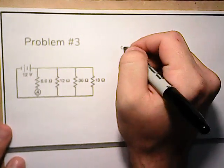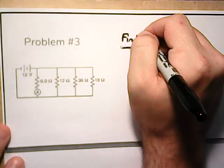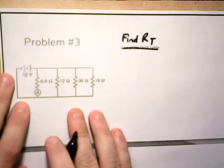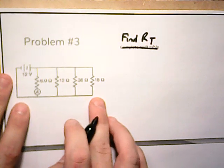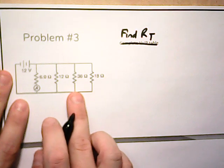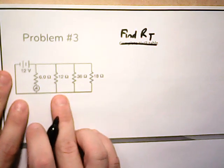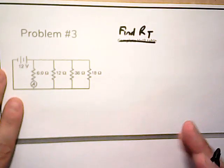Okay, let's take a look at problem number three. So for the first part, we should find R total. So this circuit has one, two, three, four branches. So we're going to have to change it from four branches to three, then three branches to two, then two branches to one to find our answer. So it's going to take three steps.